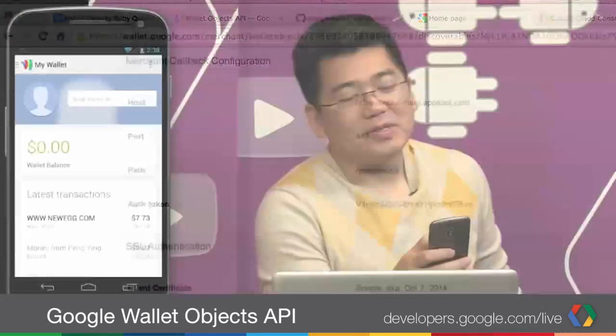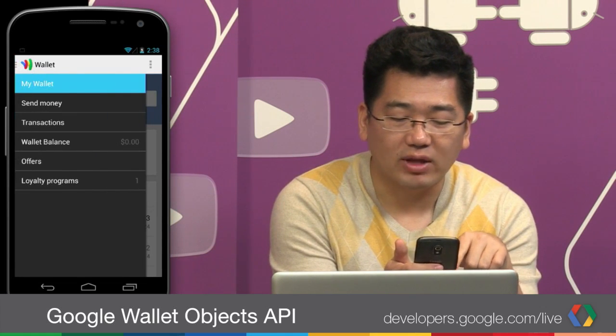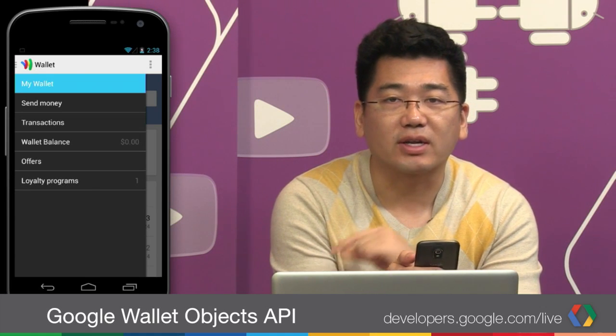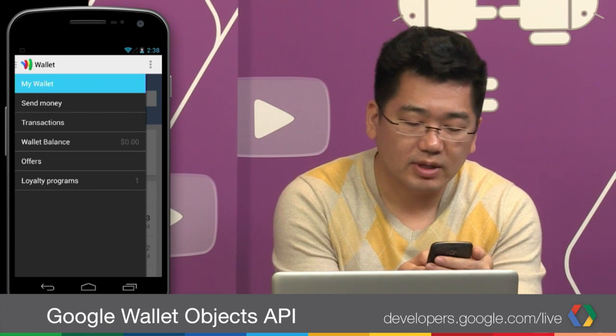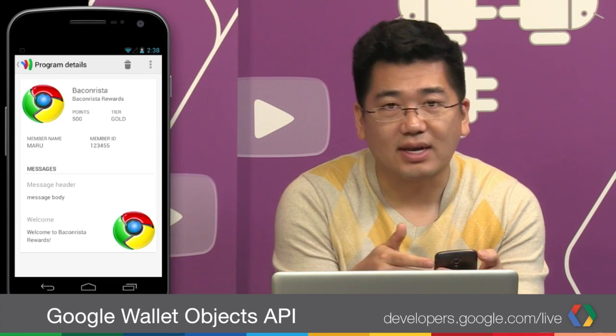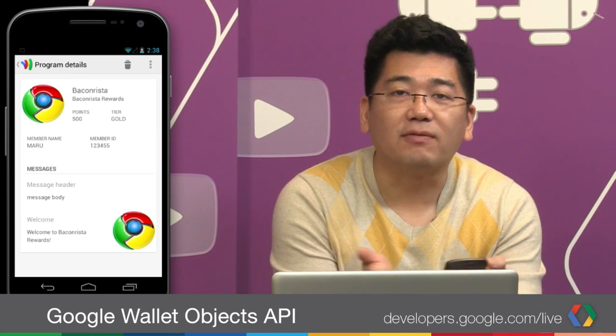Let's take a look at the phone. This is the latest Wallet app, and within this Wallet app we see a few things. This is what we call the Here Now page. I have one loyalty program that I've joined, and this occurred when Maru clicked Save This to Wallet during the demo. Let's take a look at that loyalty object first — it's Bacon Roaster Rewards, our demo merchant. Within it you can see I have 500 points, the tier I am is gold, that it's Maru who joined, and some additional details that a merchant could provide for their loyalty objects.